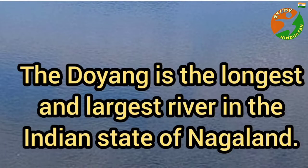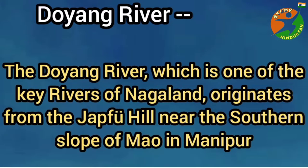Doyang is the longest and largest river in the Indian state of Nagaland. Doyang river, which is one of the key rivers of Nagaland, originates from the Japfu hills near the southern slope of Mau in Manipur.